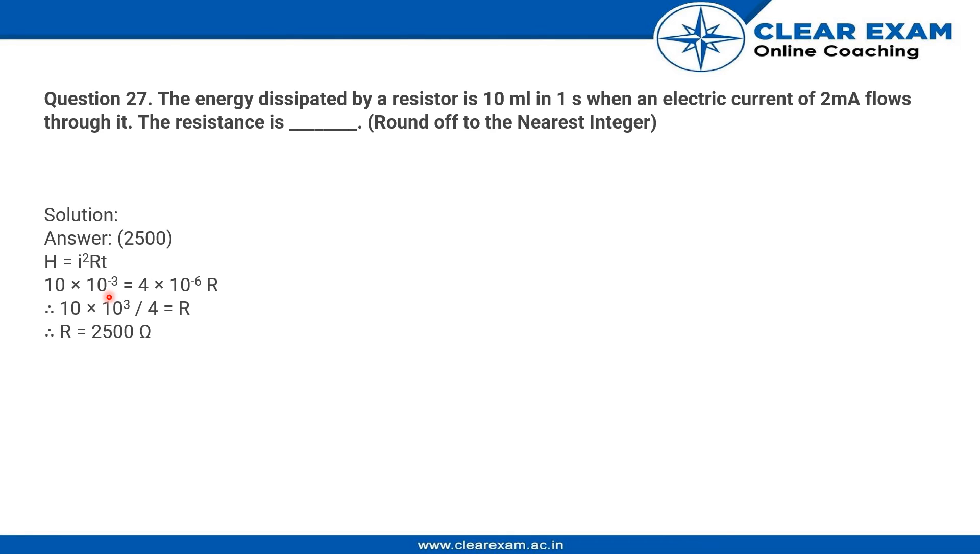R is the resistance, T is one second. Once we simplify, we get the value of R is 2500 ohms. Thank you.